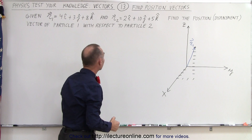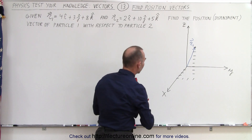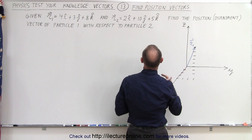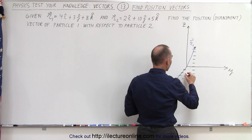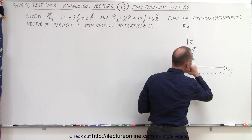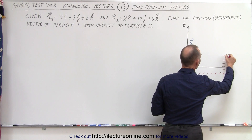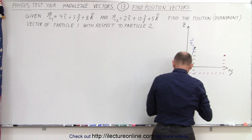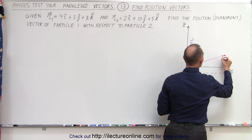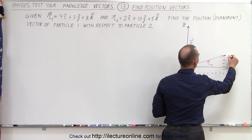Now let's find the position of the second particle. We have 2 units in the X direction, 10 units in the Y direction, and 5 units in the Z direction — right there. And that means we have a second vector, called R2, which is the position vector to particle 2.